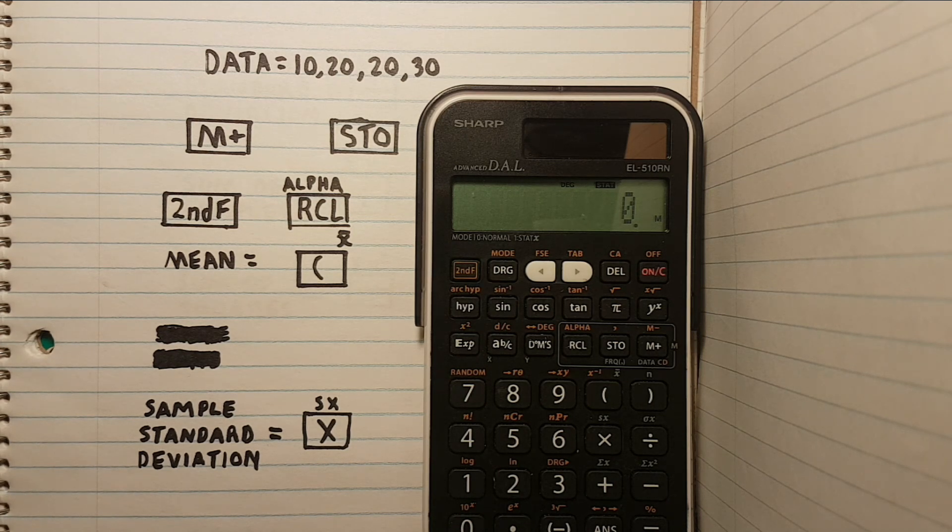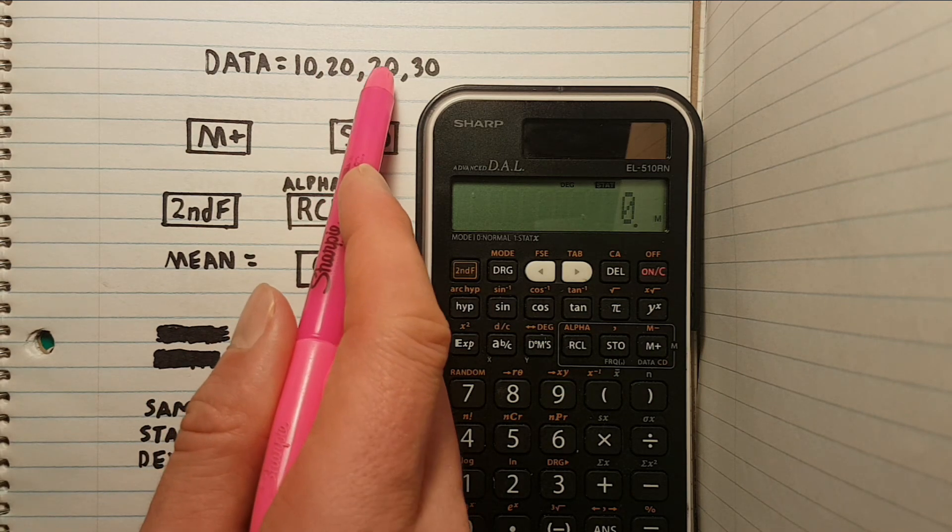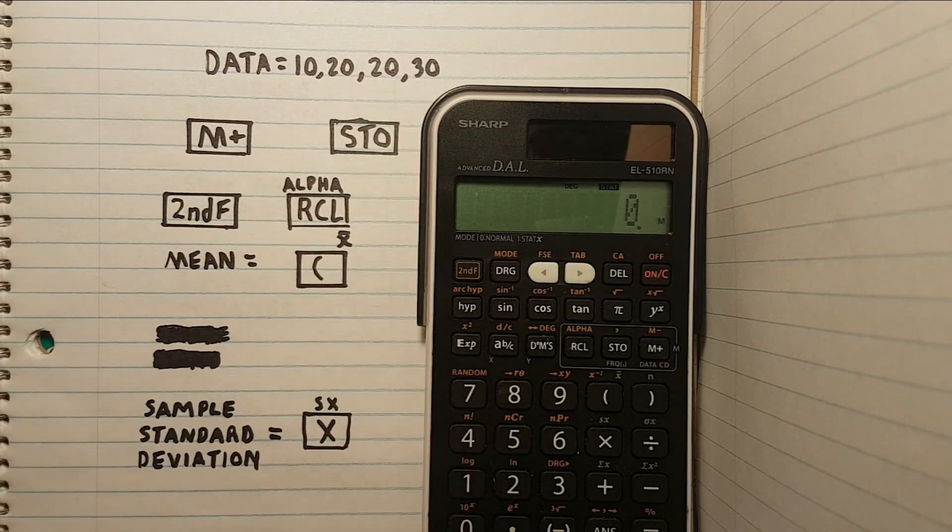Okay, now let's enter our data set. Let's say our data set consists of the measurements 10, 20, 20, and 30. We could say this is a measurement in meters of a specific distance.